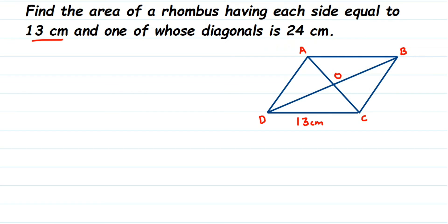In a rhombus, the diagonals bisect each other at 90 degrees — they are perpendicular to each other. At the intersection point O, the diagonals are divided into two equal parts. So if AC is 24 centimeters, then AO will be 12 and OC will be 12.